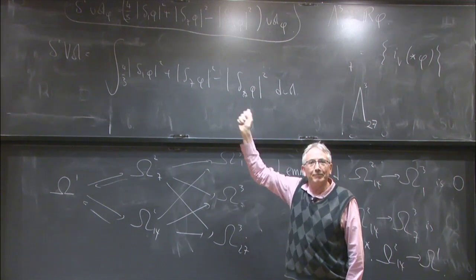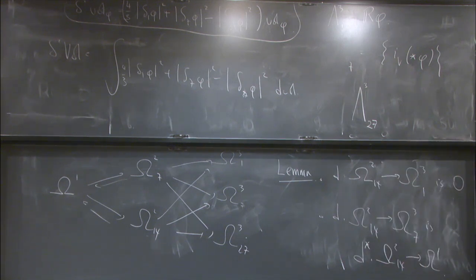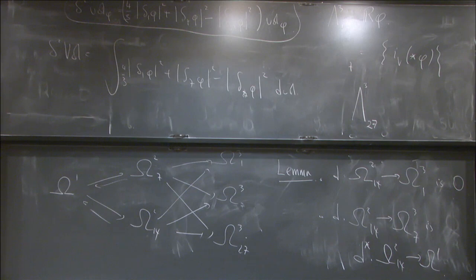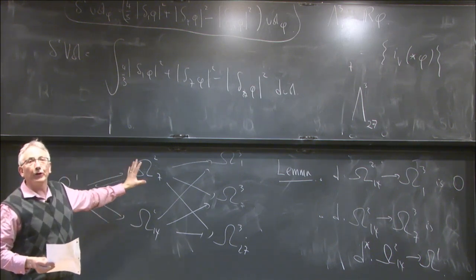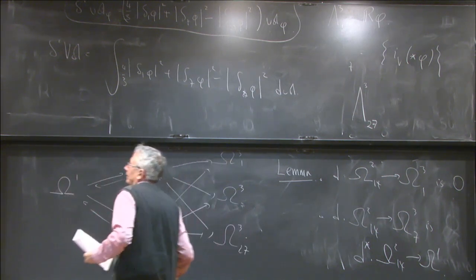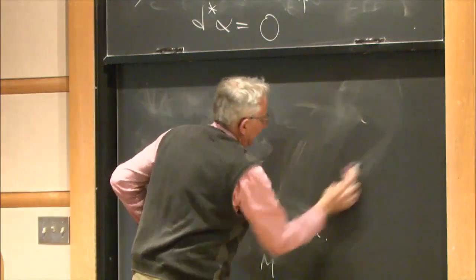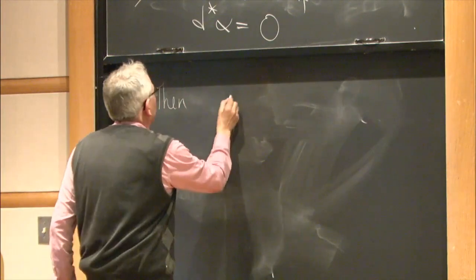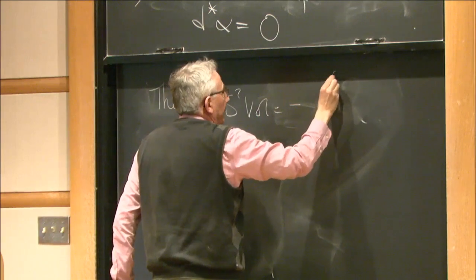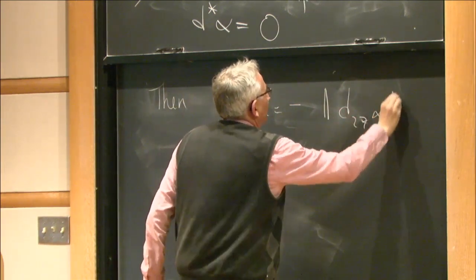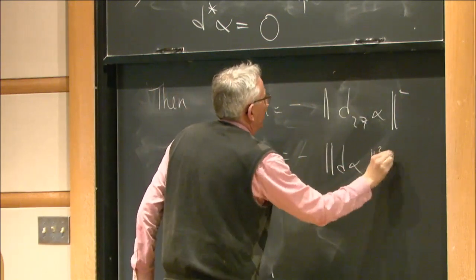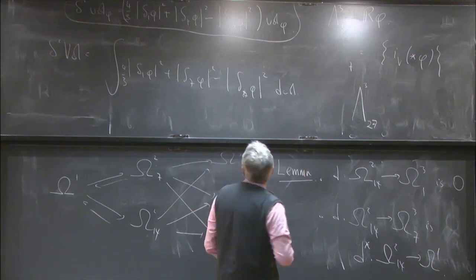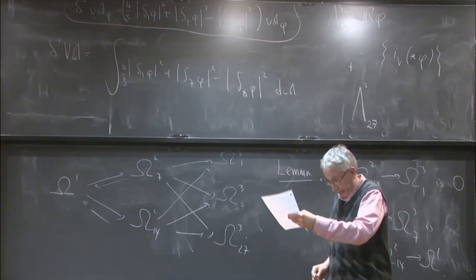For simplicity let's suppose there's no 2-dimensional cohomology — otherwise we also want to be orthogonal to the 2-dimensional harmonic forms. Under these restrictions, the second variation delta-squared vol equals minus the norm of D_27 of alpha squared, equals minus the norm of D alpha squared. So that's the outline proof of why we get this definiteness property, even though it wasn't apparent from the formula we wrote down first.